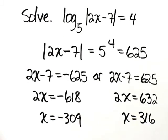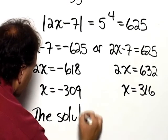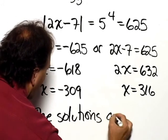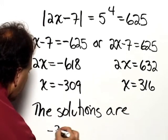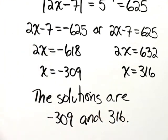You should check both answers, and if you do, you'll find that both solutions do check, and therefore the solutions are negative 309 and 316.